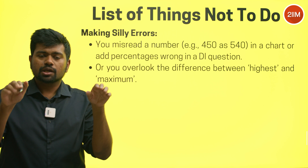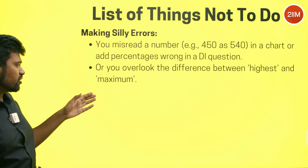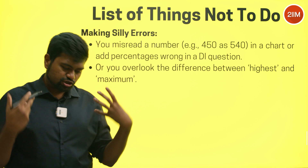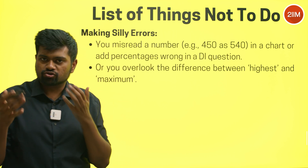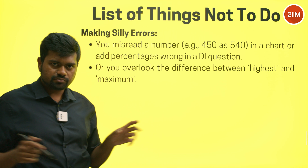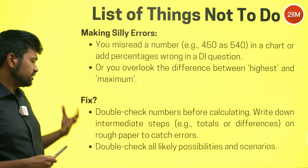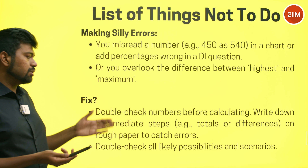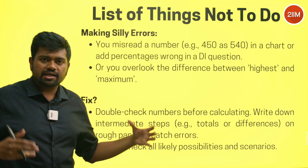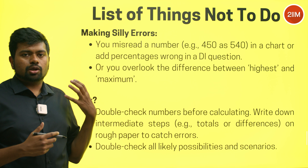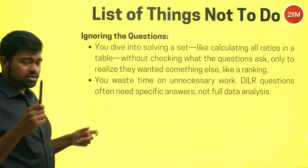'Highest' is exclusive — it means that person is unparalleled and no one else matched that score. The fix: double-check numbers before calculating, be slow and deliberate since you're building upon these values, and check all likely possibilities. Don't be hasty to eliminate scenarios — which leads to the next point.